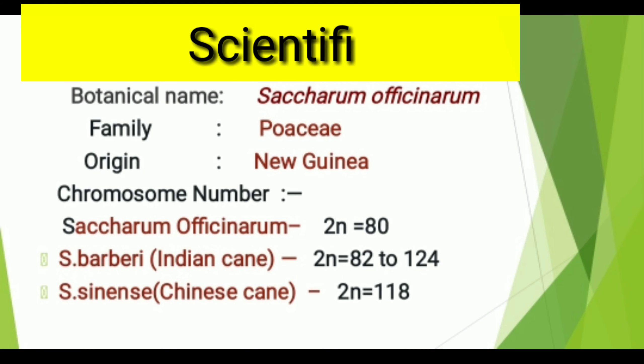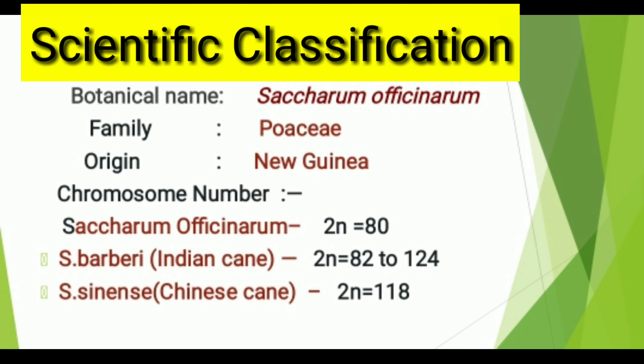The botanical name of sugarcane is Saccharum officinarum. Family: Poaceae. Origin: New Guinea. The chromosome number of Saccharum officinarum is 2n = 80, which is also known as noble cane.